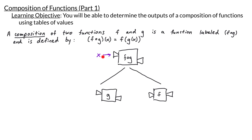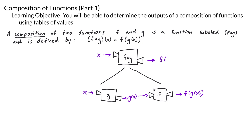So what happens when we plug in an input x into this composition? Our input x first goes into the g machine, which performs some operations on x and gives us an output. The output of the g function when we input x is what we call g of x. That output g of x then gets plugged into the f function, and the output of f when we input g of x is what we call f of g of x. So when I input x into f composed with g, what comes out is f of g of x.